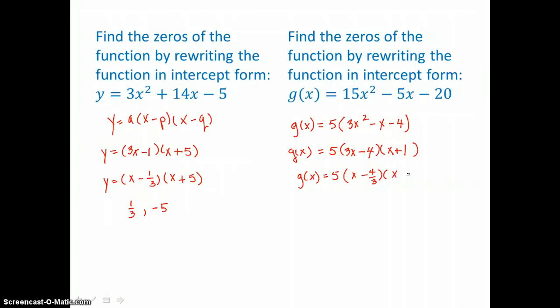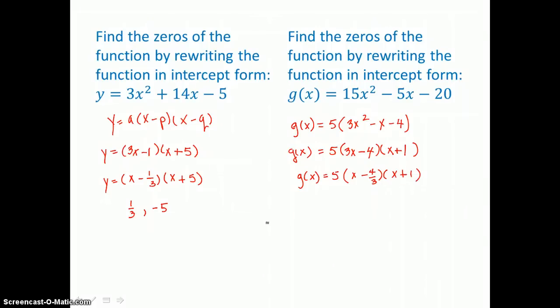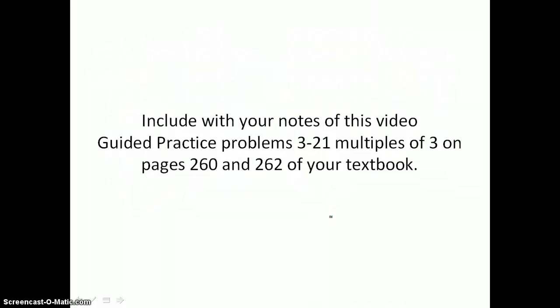And the second binomial is X plus 1. Now I can pick out P and Q: P is 4 thirds and Q is negative 1. So those are the zeros or X-intercepts for that equation — 4 thirds and negative 1. Include with your notes of this video guided practice problems 3 through 21, multiples of 3, on pages 260 and 262 of your textbook.